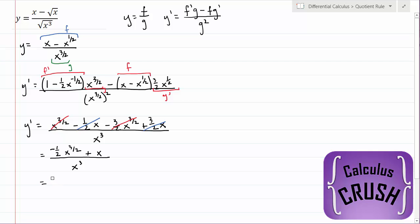Now we can factor out a 1 half x. I'm going to switch the order, so I'm going to write this term first. So we have 2 minus x to the half divided by x cubed.